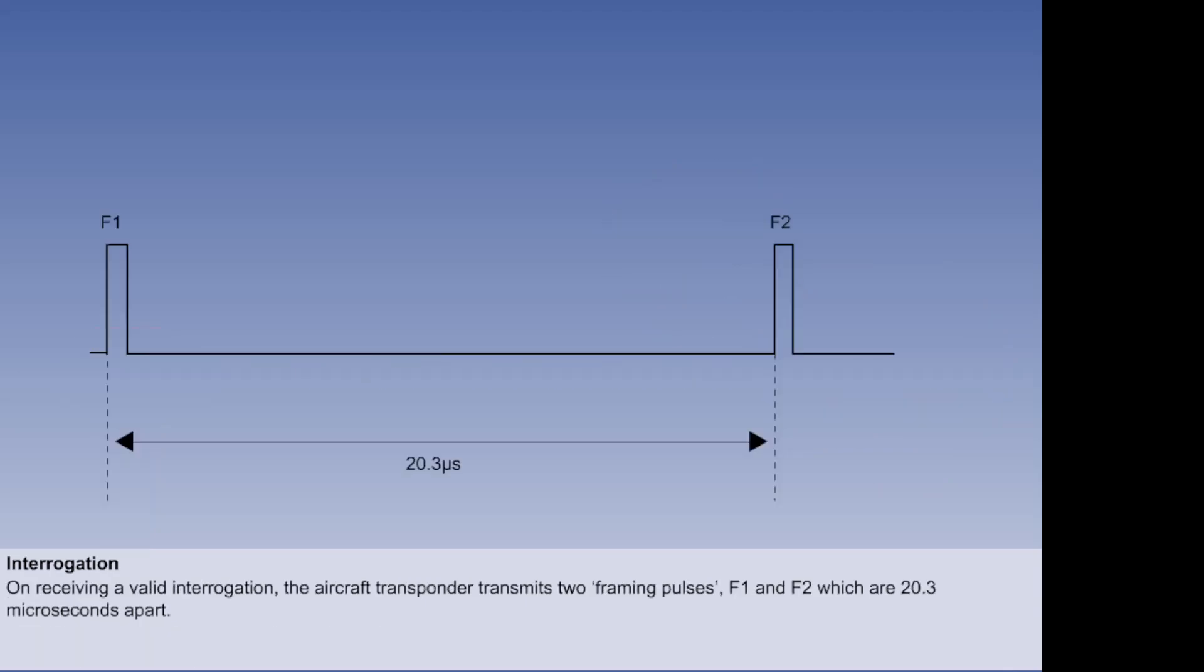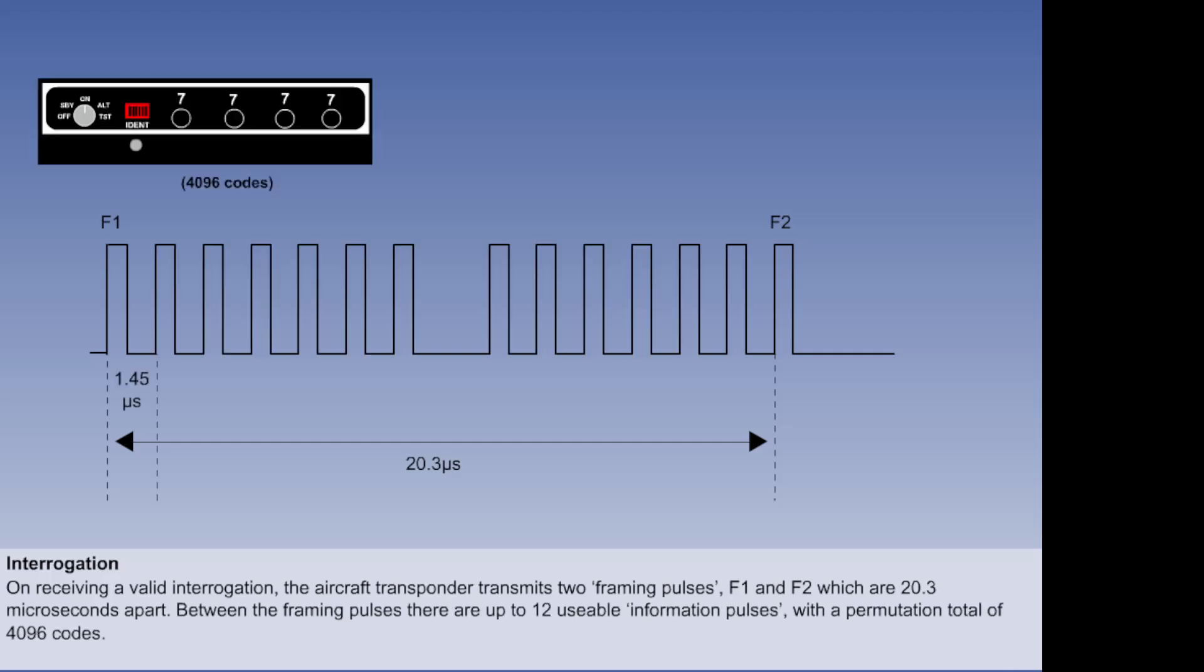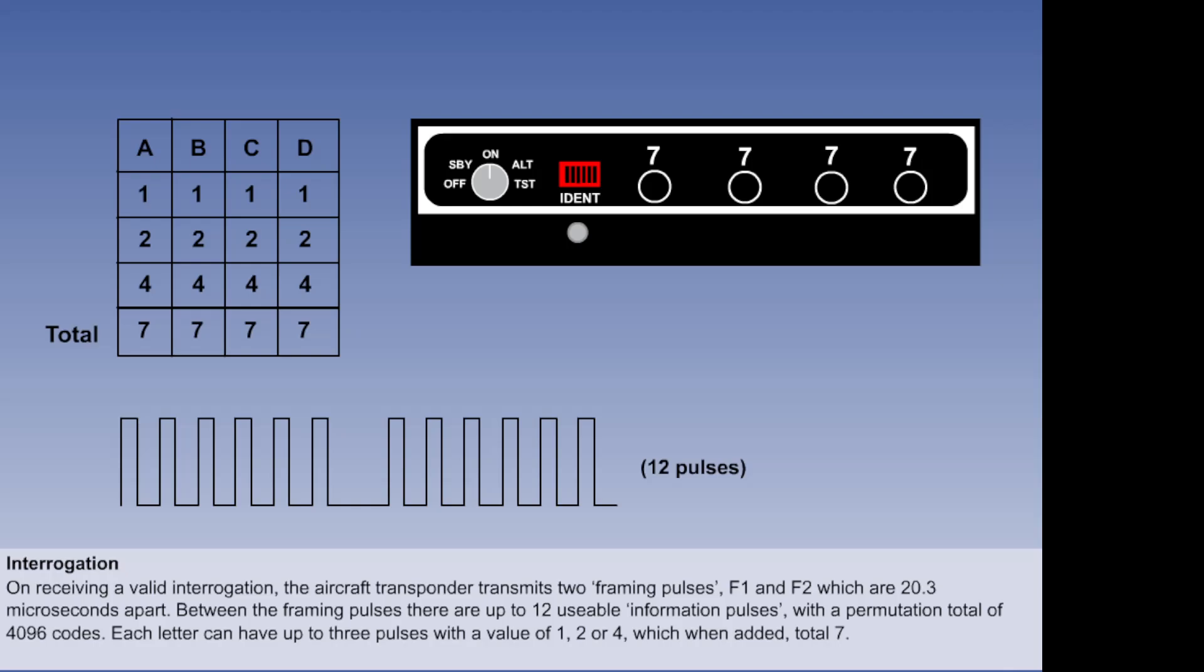On receiving a valid interrogation, the aircraft transponder transmits two framing pulses, F1 and F2, which are 20.3 microseconds apart. Between the framing pulses, there are up to 12 usable information pulses, with a permutation total of 4,096 codes. The letters A, B, C and D refer to the four digits displayed in the transponder windows. Each letter can have up to 3 pulses, with a value of either 1, 2 or 4, which, when added, total 7.